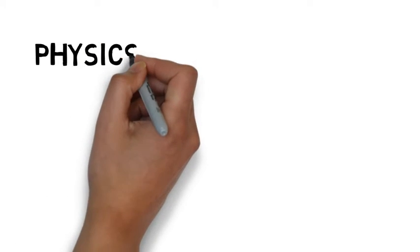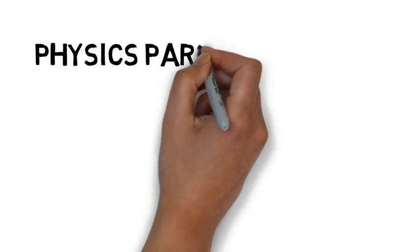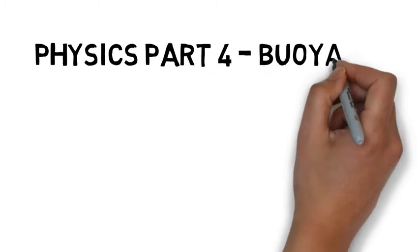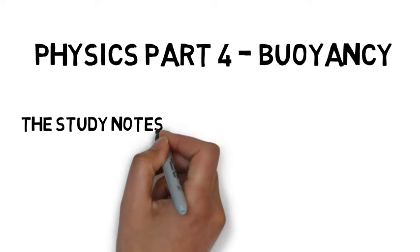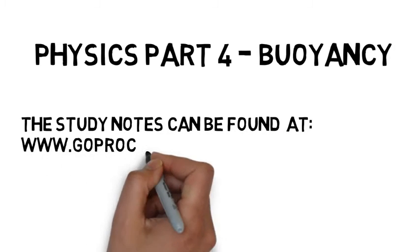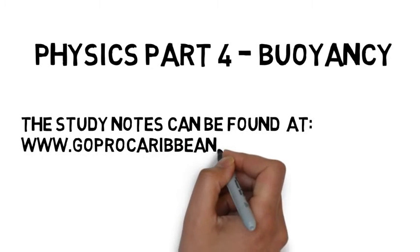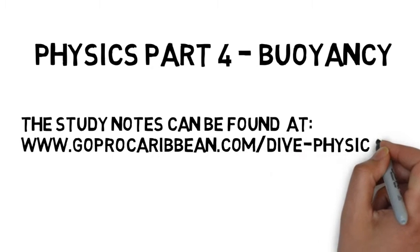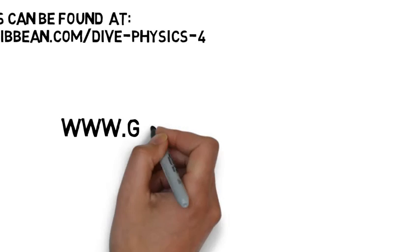Physics part 4. I'm going to look at buoyancy in its simplest terms in this first video. We're going to look at how we would describe what may happen to an object as it's moved from freshwater to saltwater or vice versa. And then in another video I'm going to look at some of the calculations you may have to do with regards to buoyancy in the PADI physics exam. The notes can be found at goprocaribbean.com/dive-physics-four.